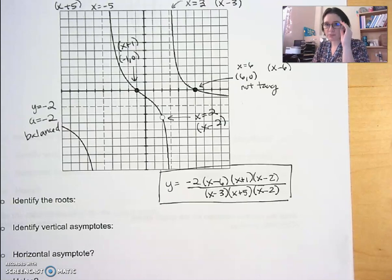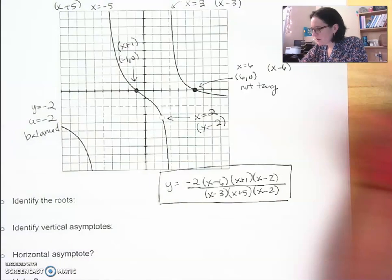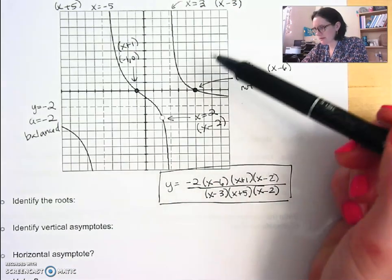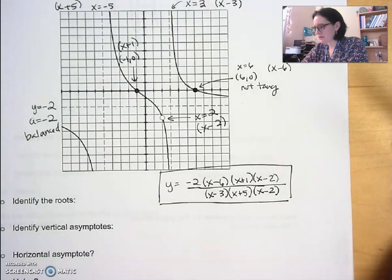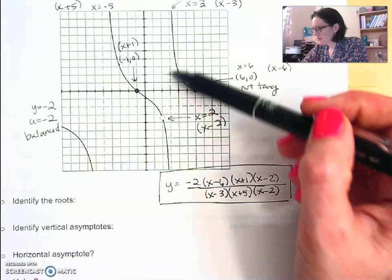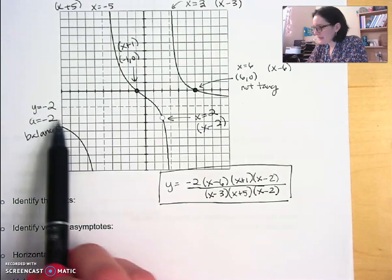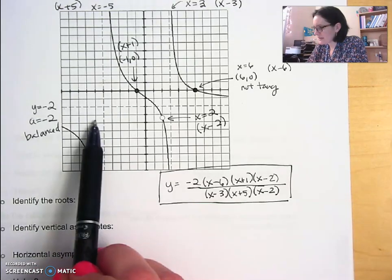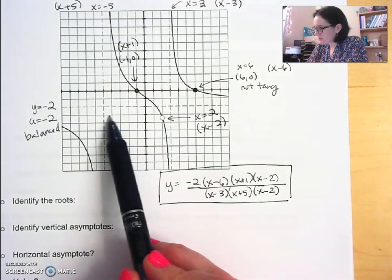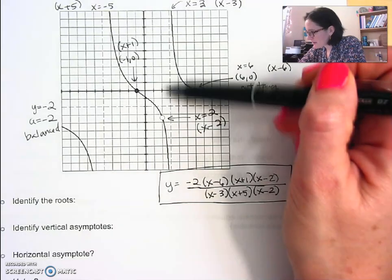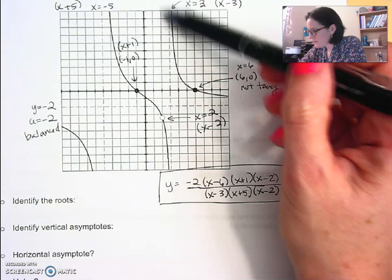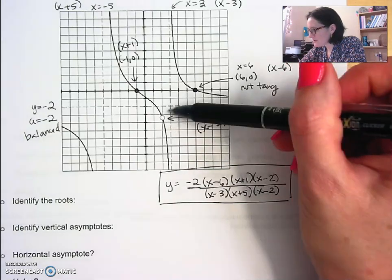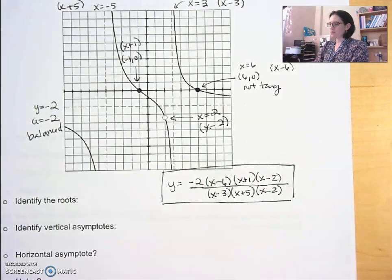At the bottom of the page it asks for domain and range. Domain is all x-values from left to right that have a point somewhere on the graph. This graph has three pieces, so there are three places where the domain is interrupted: the vertical asymptote at x = −5, the vertical asymptote at x = 3, and the discontinuity at x = 2. Coming from negative infinity toward positive infinity, it's interrupted at −5, picks up again after −5, interrupted at x = 2, then interrupted again at x = 3.